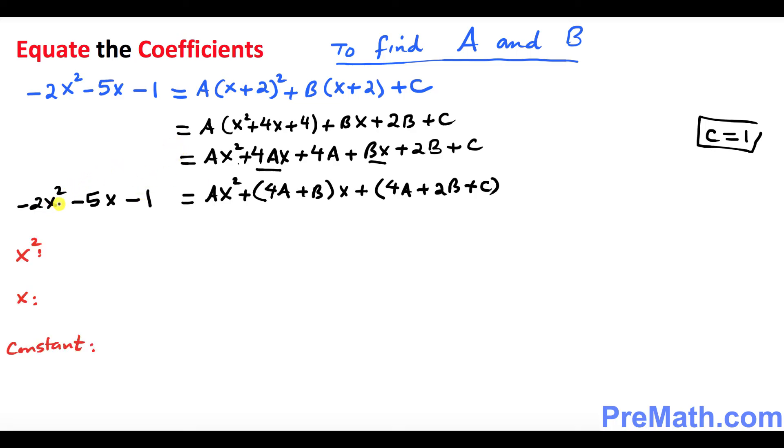So let's focus on the square coefficients. On the left hand side this is negative 2 equals to on the right hand side we just simply got A. Isn't it? So for x is going to be, for x variable, the coefficient is negative 5 on this side equals to 4A plus B. And for the constant, it's going to be negative 1 equals to 4A plus 2B plus C.